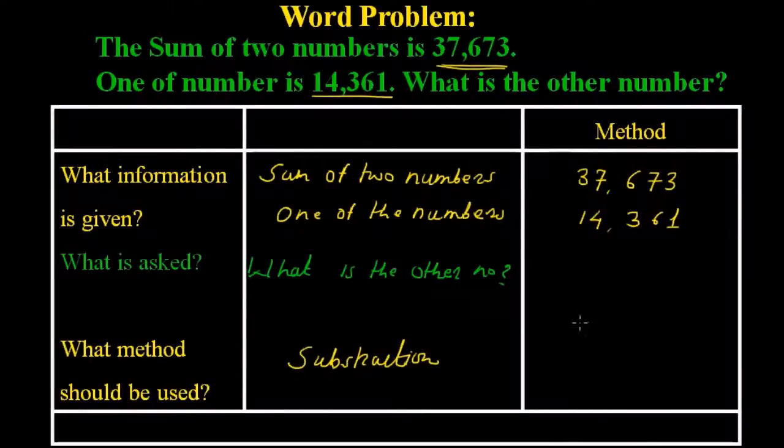Now let us solve this problem. First number is 37,673 minus 14,361.